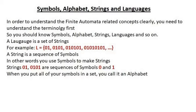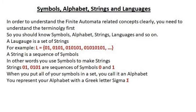When you put all of your symbols in a set, you call it an alphabet. You represent your alphabet with the Greek letter sigma. So in this example, sigma, or the alphabet, has symbols 0 and 1 — we are putting them in the form of a set and calling it an alphabet.